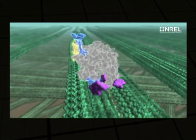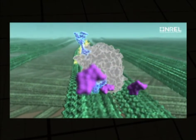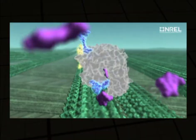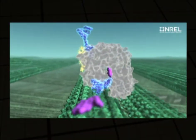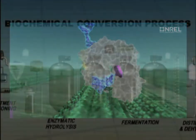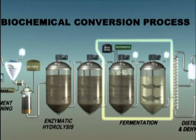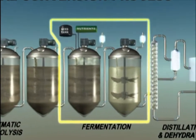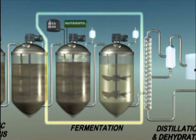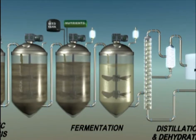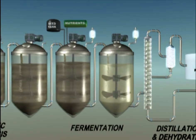Glucose and xylose are the sugars that can most readily be fermented into ethanol or other biofuels. During the fermentation process, the mixture is inoculated with microbes such as yeast or bacteria that digest the sugars and secrete compounds that can be used as biofuels or biofuel components.